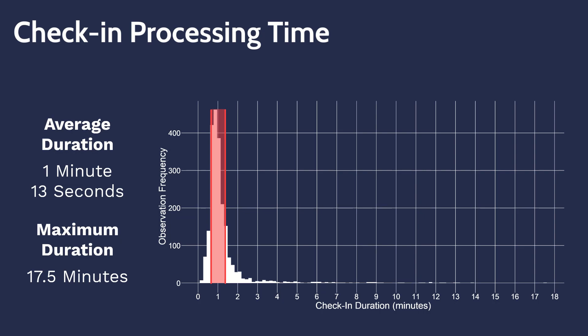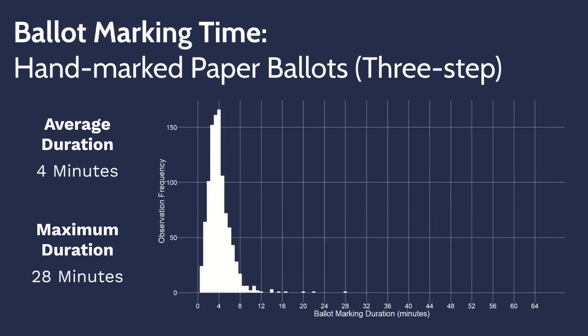The ballot marking step in the three-step process exhibits an average marking time of four minutes and a maximum marking time of 28 minutes. A distribution chart of ballot marking times for paper ballot marking is shown, with the majority of voters taking between two and a half and five minutes to mark their ballot.